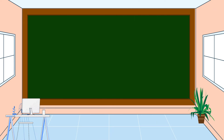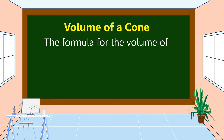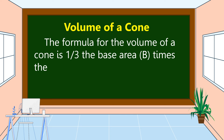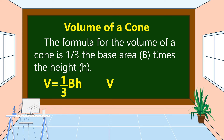Next, we're going to discuss the volume of a cone. The formula for the volume of a cone is one-third the base area, characterized by capital letter B, times the height, represented by small letter H. So V = (π × r² × h) ÷ 3. Since the base of a cone is a circle, the area of the base is π × r².